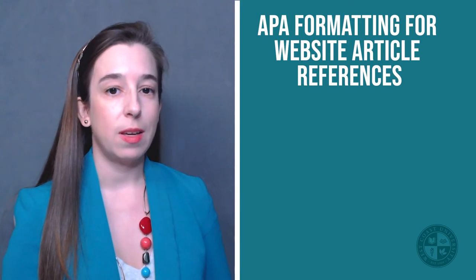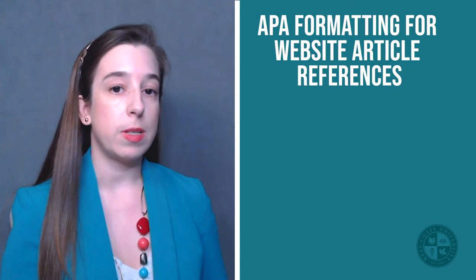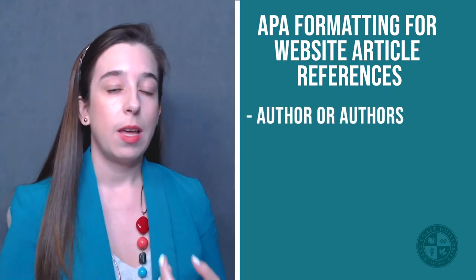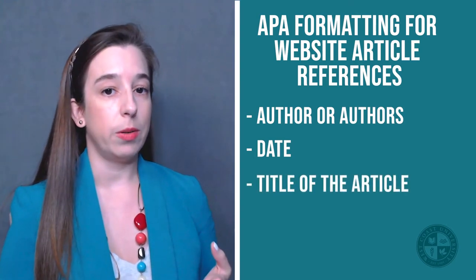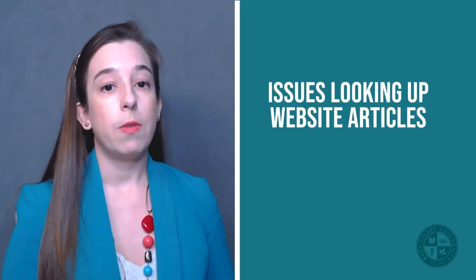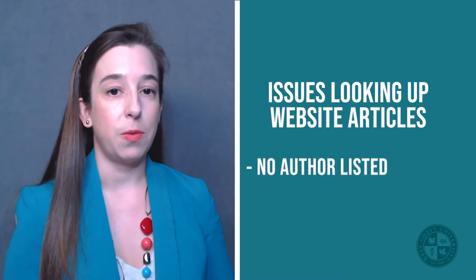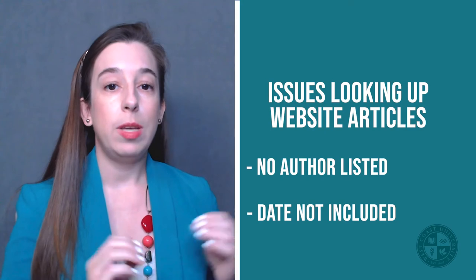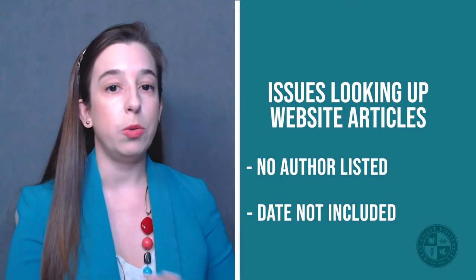Now that I've hopefully convinced you that references do actually matter, let's talk APA formatting for website article references. When referencing website articles, there are a few elements we must include: we start with the author or authors, then the date, then the title of the article, possibly the name of the website, and then the URL. When looking up website articles, you might not find a listed author or a date, but APA does provide a way to handle those situations. Let's look at a couple of examples.